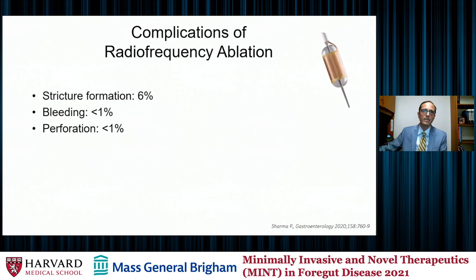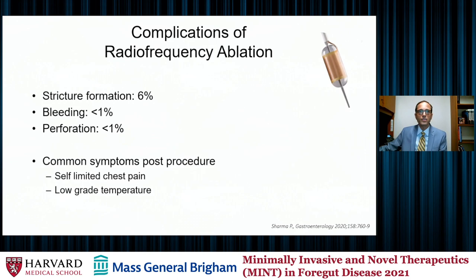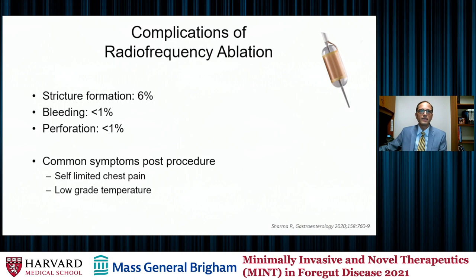Less common complications can include rare bleeding and perforation, which occur less than 1% of the time. There are also common post-procedure symptoms. I inform patients that they can expect self-limited chest pain that may last four to five days, but generally goes away within a week. We use GI elixirs to help manage this discomfort. I frequently will see a low-grade temperature after this, but these are self-limited symptoms.